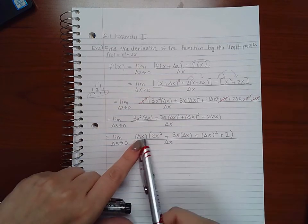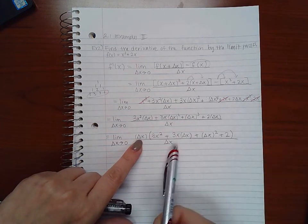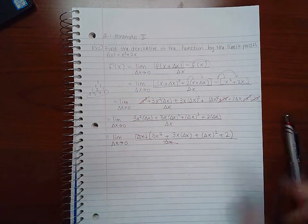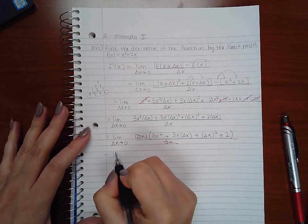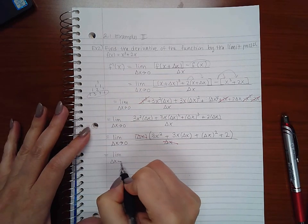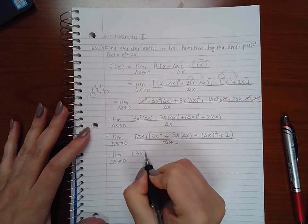And then the delta x I factored out from all of these terms will reduce with the delta x in the denominator, which should leave me with an expression that I can use direct substitution.